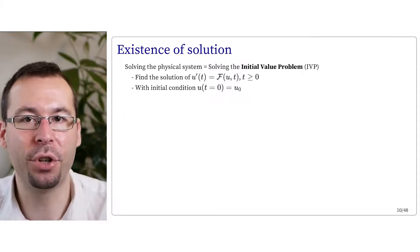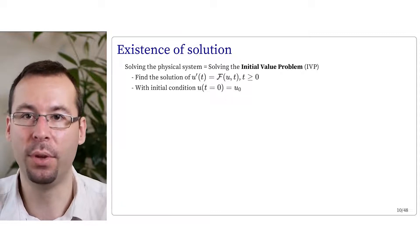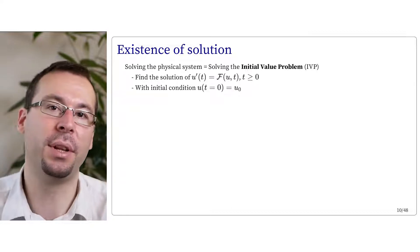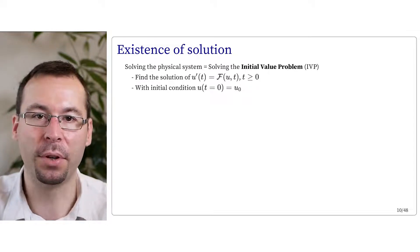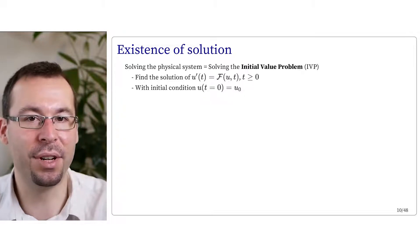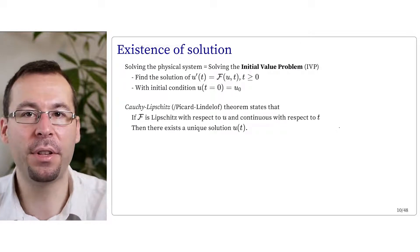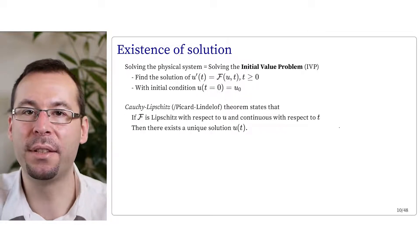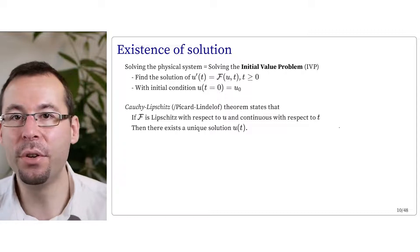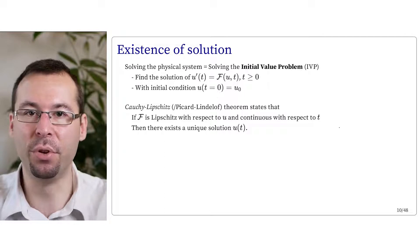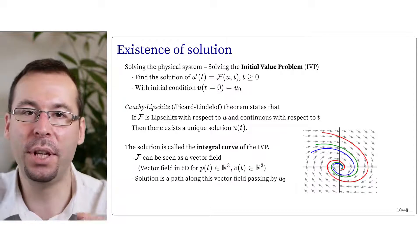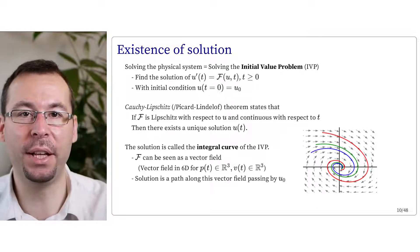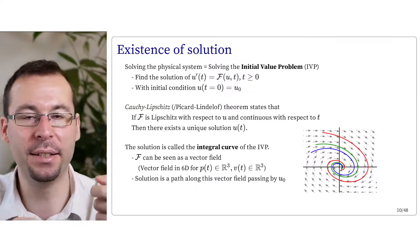Before going to numerical solutions, we consider what we know theoretically. Solving the dynamics of a particle with given initial position and velocity consists in solving an initial value problem: find u(t) such that u prime equals f(u) for t > 0, with u(0) = u₀ known. The Cauchy-Lipschitz theorem states that if f is Lipschitz with respect to u and continuous with respect to t, then there exists a unique solution u(t). This solution can also be called the integral curve of the initial value problem, as f can be seen as a vector field and the solution is a path along this field passing through u₀.